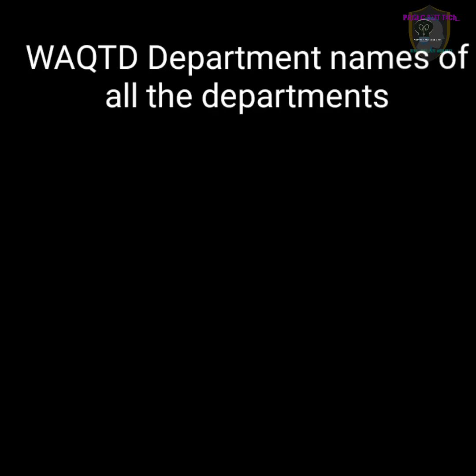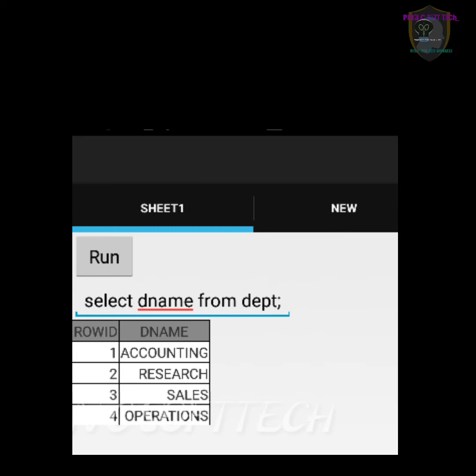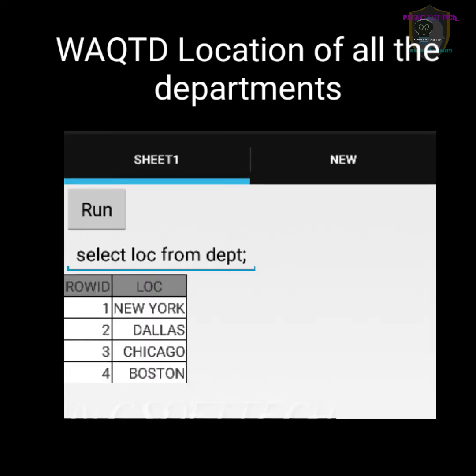Next question: write a query to display department names of all the departments. Answer: SELECT dname FROM dept; — it displays department names of all departments. Next question: write a query to display the location of all the departments. Locations are in the dept table, so: SELECT loc FROM dept; — it gives only locations. See the output.